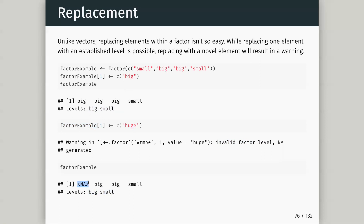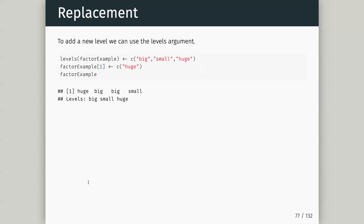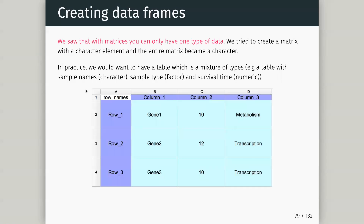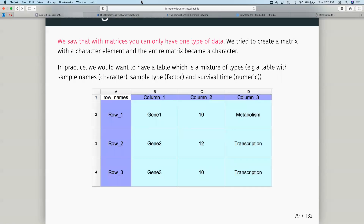To add a new level we can use the levels argument — I set levels on my factor and now add 'huge' to the existing levels. Now if I assign the first element to be called 'huge' I don't get an NA — it accurately fills in the value. You need to re-level the factor before you can add new categories.